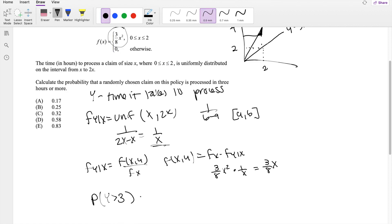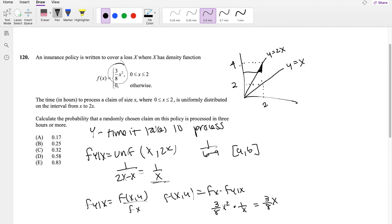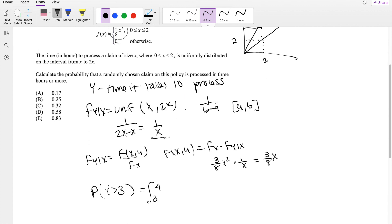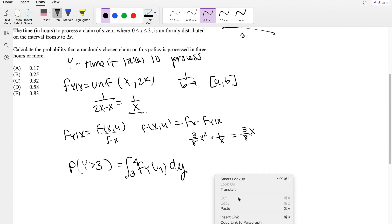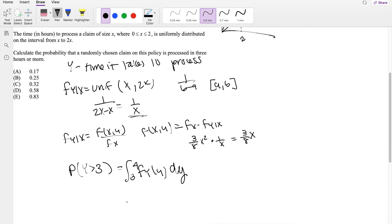So that means we actually have to find from 3 to 4, right? Because the maximum value y can take is 4. Of f(y), so we actually need the marginal distribution of y in order to find the probability that y is greater than 3, dy. We know by definition f(y), the marginal distribution of y, is equal to the integral from negative infinity to infinity of f(x,y) dx.